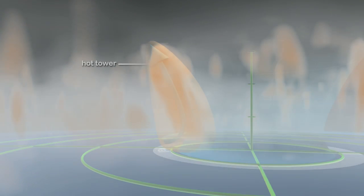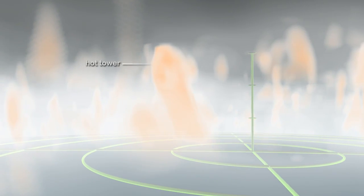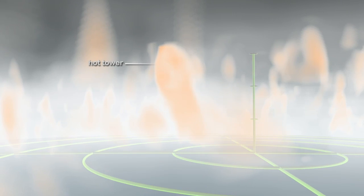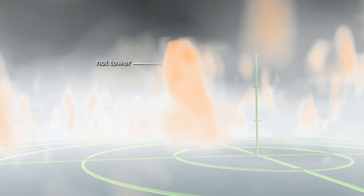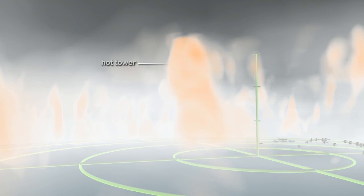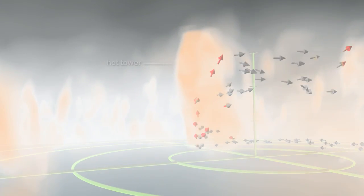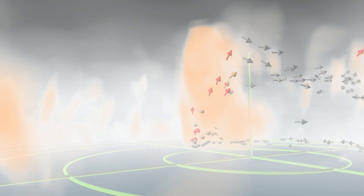High-resolution computer simulations of hurricanes show the formation of hot towers. In this simulation of Hurricane Bonnie, hot towers are clearly visible. The arrows show winds swirling near the surface where energy is picked up from the warm ocean. Some of this air moves into the hot tower and rises rapidly, boosting the hurricane's strength.